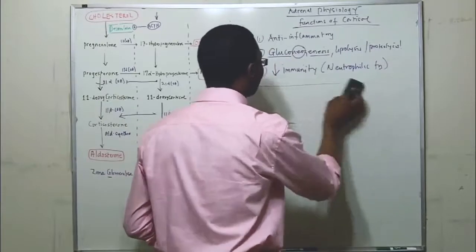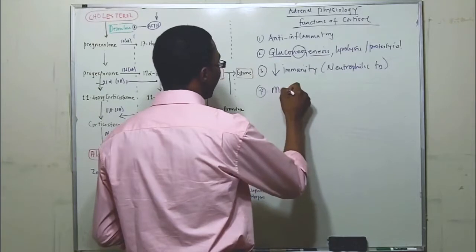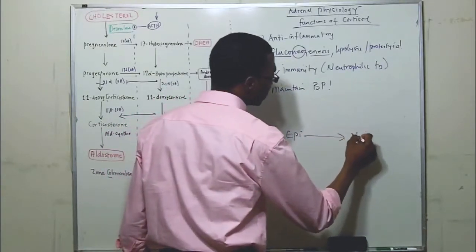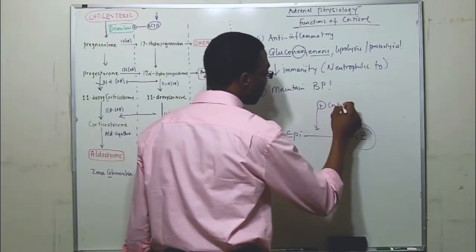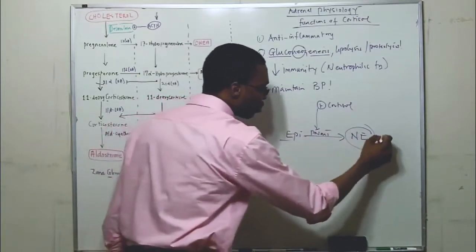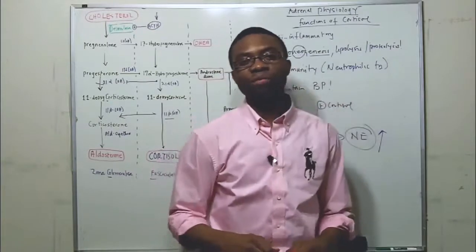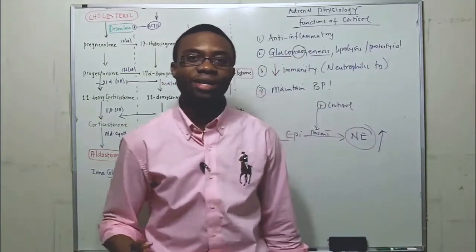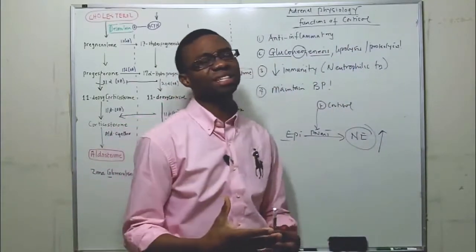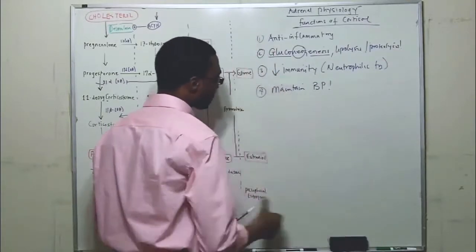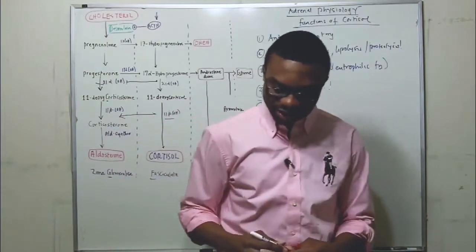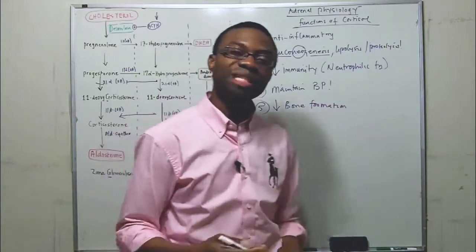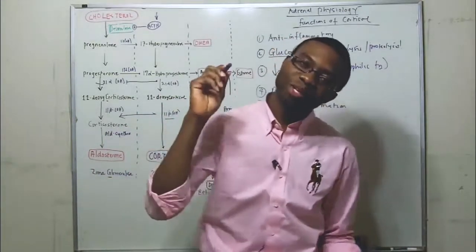Now, the fourth function of cortisol is to maintain your blood pressure. Wait a minute, how does it do that? I just told you, epinephrine is always converted into norepinephrine under the influence of cortisol, PNMT. What does norepinephrine do when your blood pressure drops? It vasoconstricts your blood vessels, increases your afterload, increases your preload, increases cardiac output, increases your blood pressure. It's going to increase your heart rate. So, there you go. You can maintain your blood pressure. This is how everything is connected. Cortisol does that. That's how it maintains your blood pressure. The next function is it also decreases bone formation. That's why these patients are predisposed to osteoporosis.